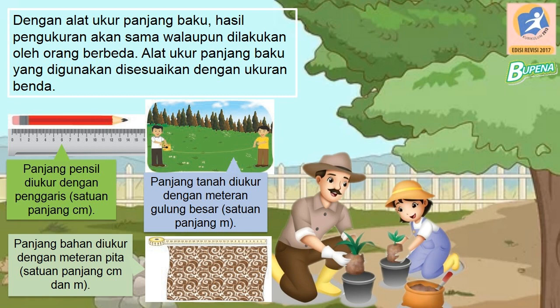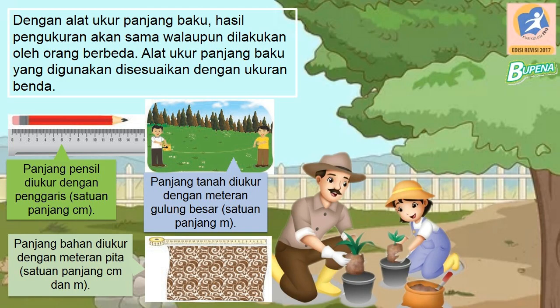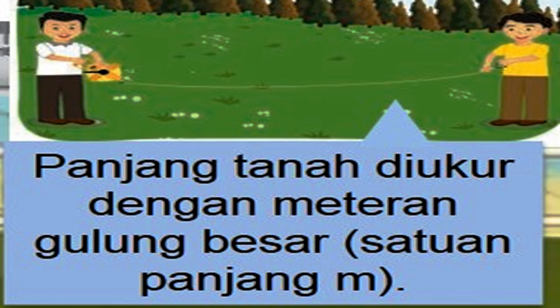Kalian perhatikan: panjang pensil diukur dengan penggaris, yaitu satuan panjang cm. Panjang bahan diukur dengan meteran pita, dengan satuan panjang cm dan meter. Panjang tanah diukur dengan meteran gulung, dengan satuan panjang meter.